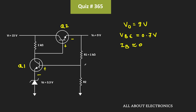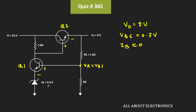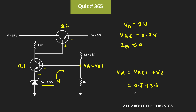Now, let's say the voltage at this end is equal to Va, and this voltage Va is actually Vb1. The zener voltage of this zener diode is equal to 3.3V. If we apply KVL in this loop, then we can say that Va is equal to Vbe1 plus Vz, that is 0.7V plus 3.3V, which equals 4V. That means this voltage Va is equal to 4V.